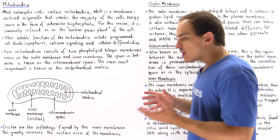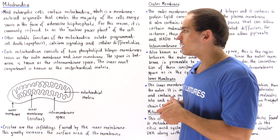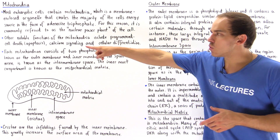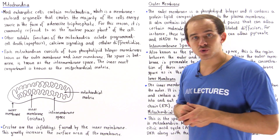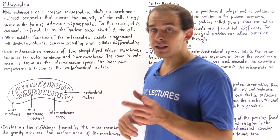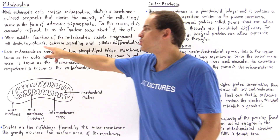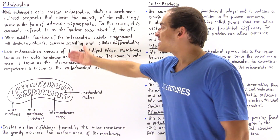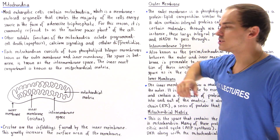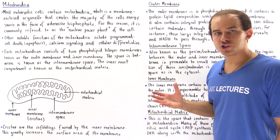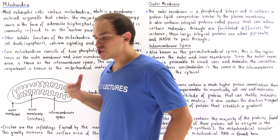Other notable functions of the mitochondria include programmed cell death known as apoptosis, calcium signaling, and cellular differentiation. So what exactly is apoptosis?